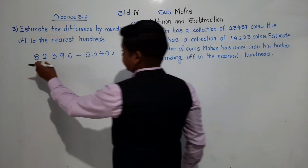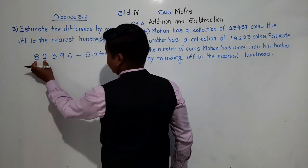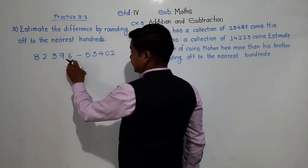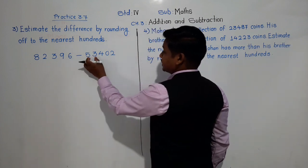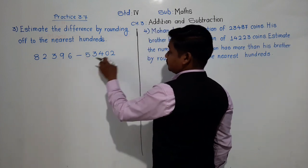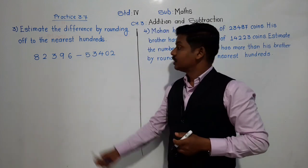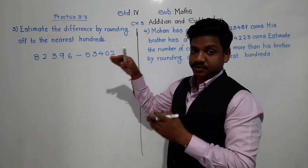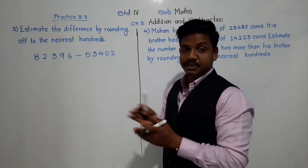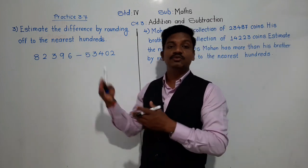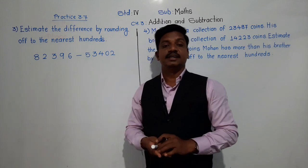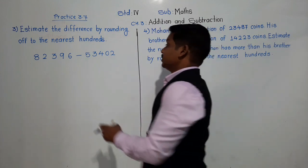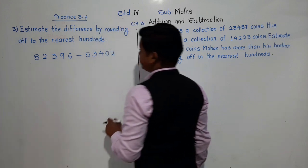The numbers are 82,396 minus 53,402. We have to subtract — we have to find the difference — but not directly. We have to first round off to the nearest hundreds and then subtract.